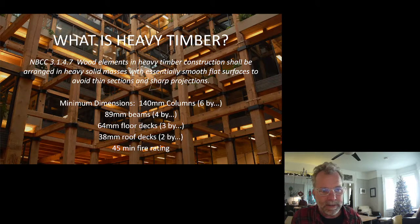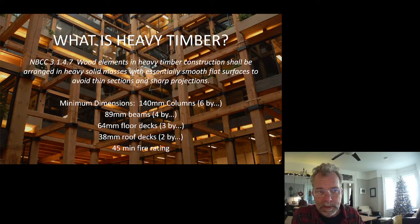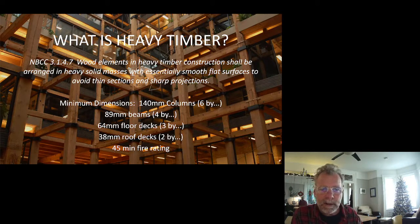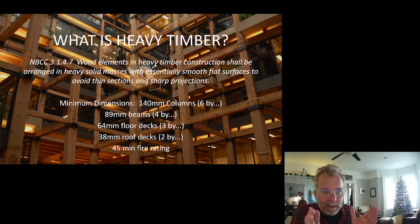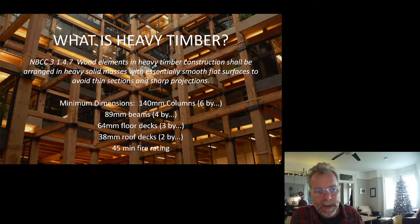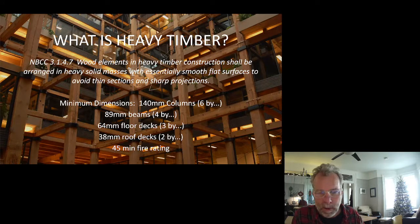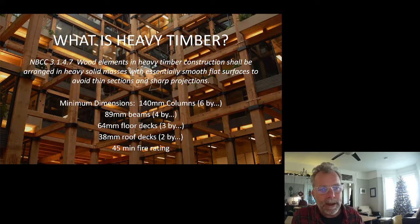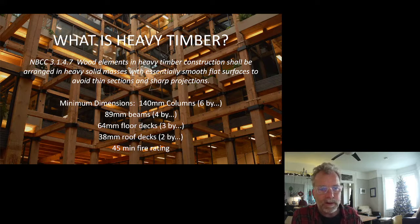A six-by-six is not sawn at 140 millimeters — it's sawn at 152 millimeters, sawn six-by-six. But then it's planed, and planning takes a quarter of an inch off every surface in order to get the true dimensions. So the nominal dimension is the planed dimension, not the rough-sawn dimension.